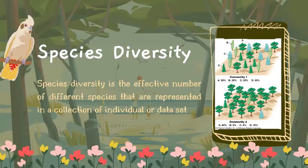A species is one of the basic units of biological classification at its taxonomic rank. A species can also be defined as a group of closely related organisms that share common characteristics and qualities, and are usually capable of interbreeding and producing fertile offspring.